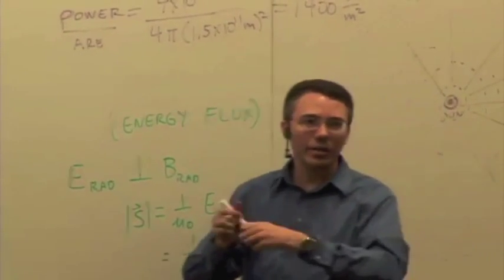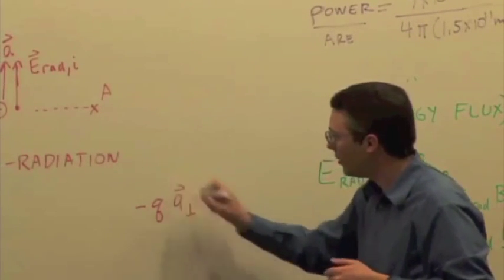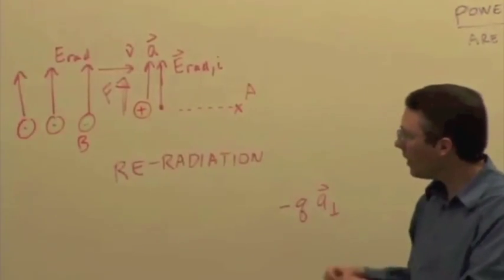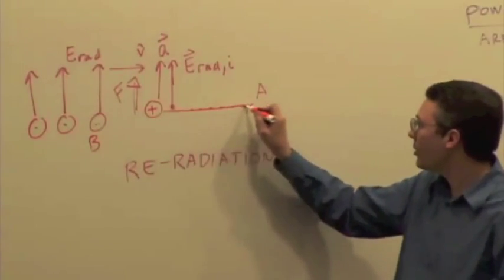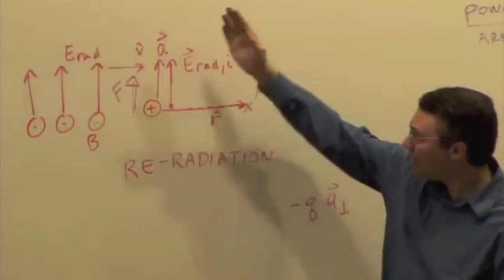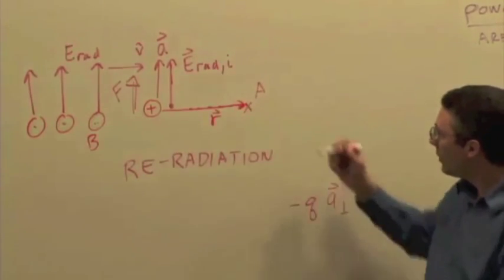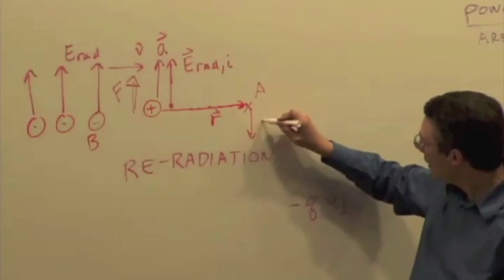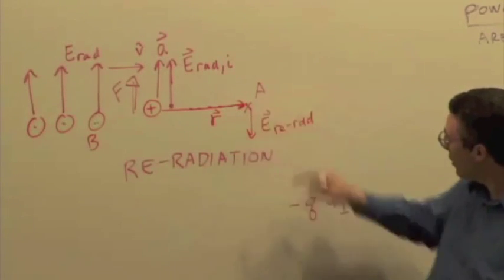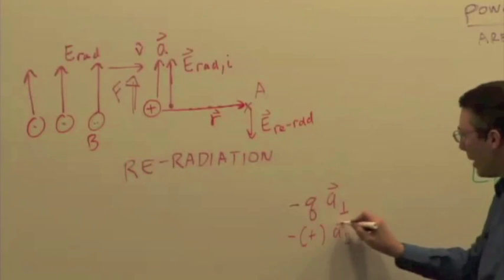Why down? It's opposite, right? Negative Q times A perpendicular is the direction, is how we get the direction. So we draw the R vector pointing from the charge to location A. And we say, okay, this acceleration, that is the perpendicular component. So when the radiation reaches this point, this E, call it E-re-rad, just to make it different, is pointing downward. It's negative times this positive charge times A perpendicular, so it's going to be downward.